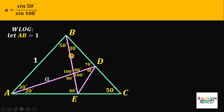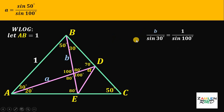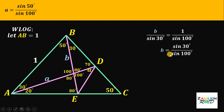Let this side length equal b. Again, we will use the law of sines. We get b over sine of 30 degrees equals 1 over sine of 100 degrees. Solving for b, we get b equals sine 30 degrees over sine of 100 degrees. We use the exact value of this side b: sine 30 degrees over sine of 100 degrees.